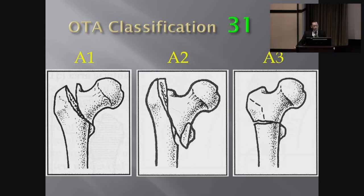The OTA classification divides fractures into three areas. Going from left to right, this is a general intertrochanteric fracture. As it extends down to the lesser trochanter it becomes a subtrochanteric fracture, and here are the more classic subtrochanteric fracture patterns.